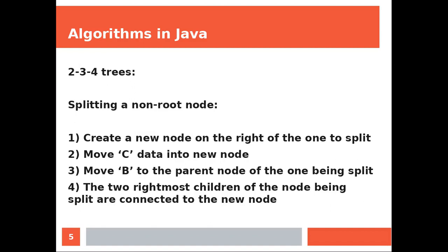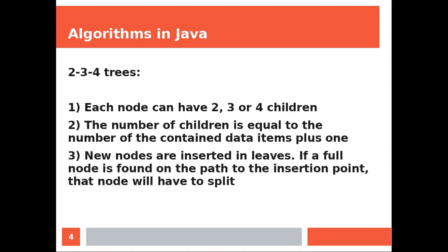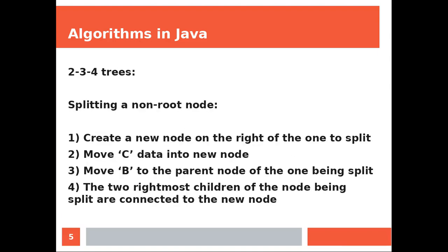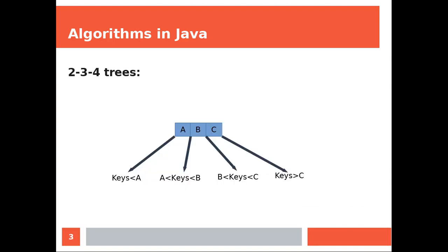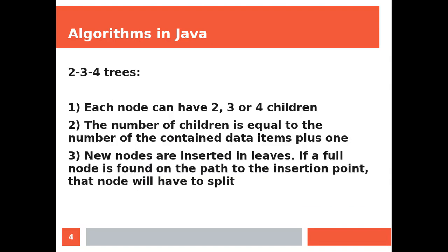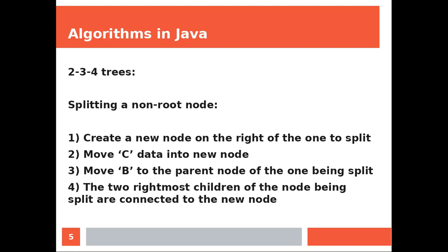Splitting a non-root node: create a new node on the right of the one to split. Move C data into the new node. Move B data to the parent node of the one being split. The two rightmost children of the node being split are connected to the new one.